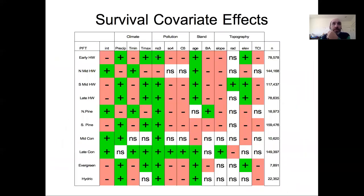This table shows the direction of those covariate effects. We can see that acid deposition is predominantly negative, ozone is predominantly negative, nitrogen is predominantly positive, and other things are often mixed—they affect some things positively and other things negatively.